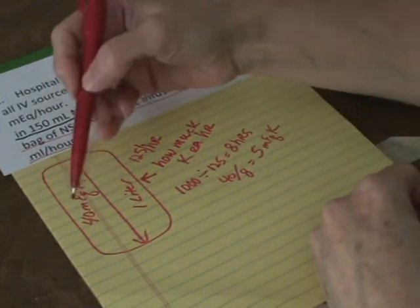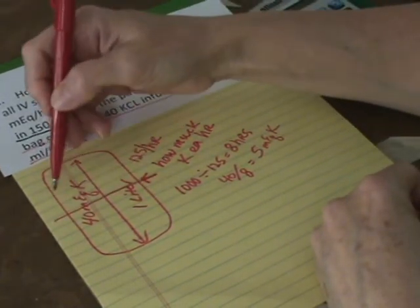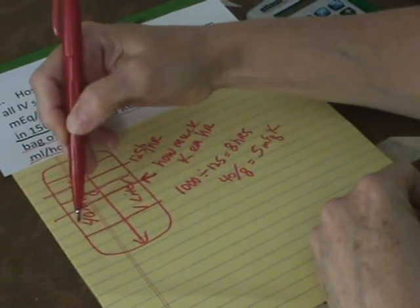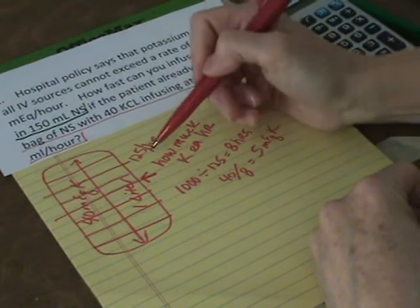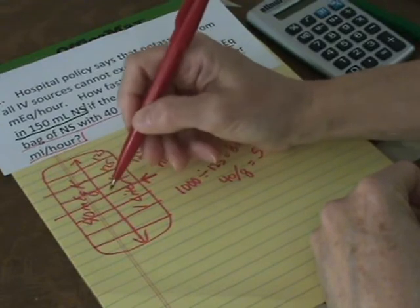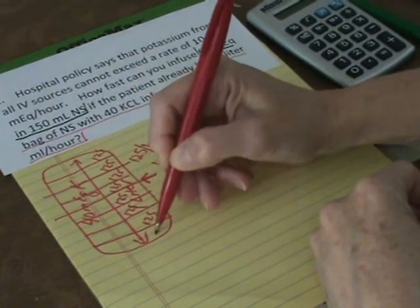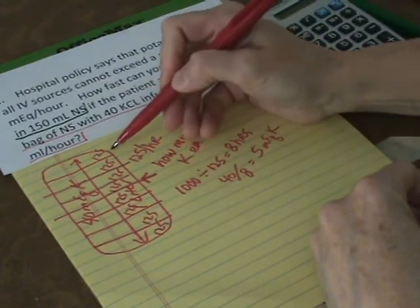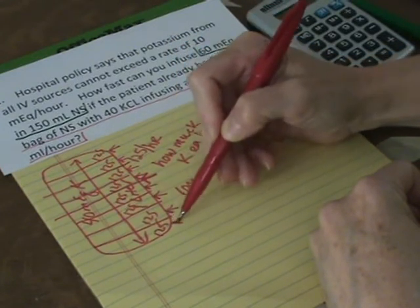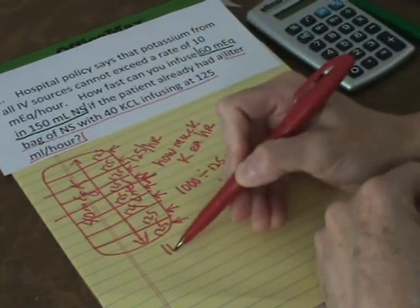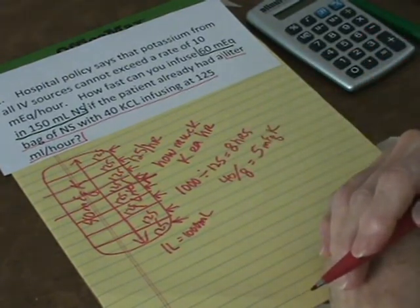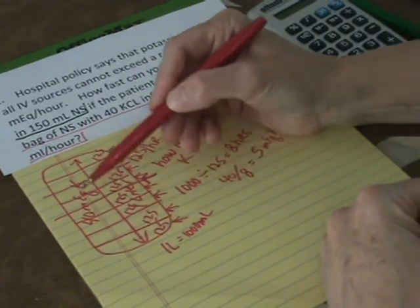Okay. You can look at it this way. You can say, there's my liter bag at 125 an hour. Every hour, this much goes in. 2, 3, 4, 5, 6, 7, 8. If I add those 125s up, that's 1 liter. 1000 milliliters. Right? So I have to put this 40 of potassium evenly in that whole bag.